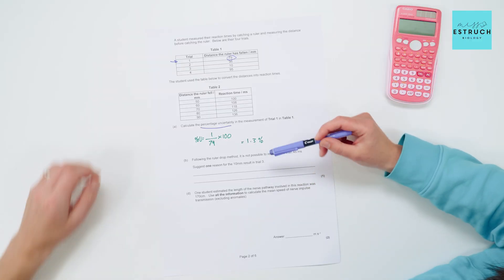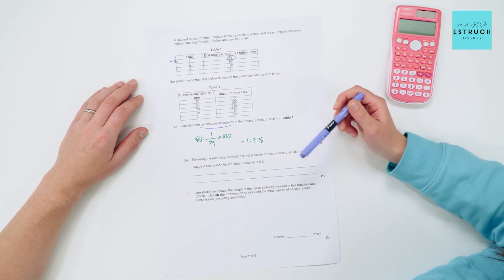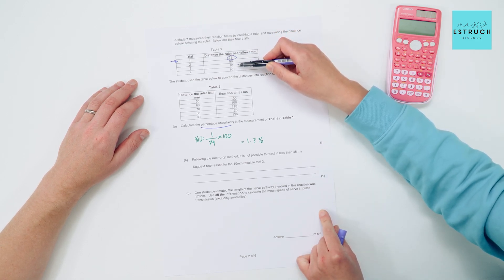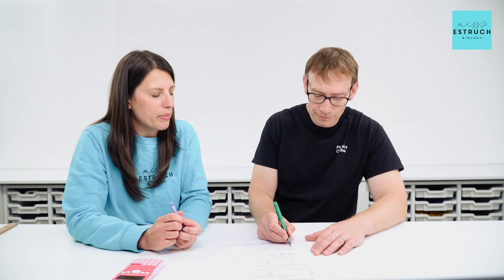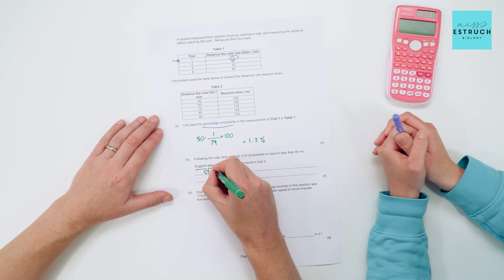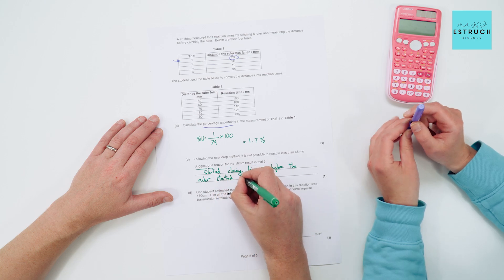Following the ruler drop method, it's not possible to react in less than 45 milliseconds, so give one reason for the result in trial three, where the ruler was caught at a much shorter distance. It's a suggest question — one reason could be that the student started moving their fingers before they should have done and got lucky that they hit the ruler as it started to fall, essentially jumping the gun — a false start.